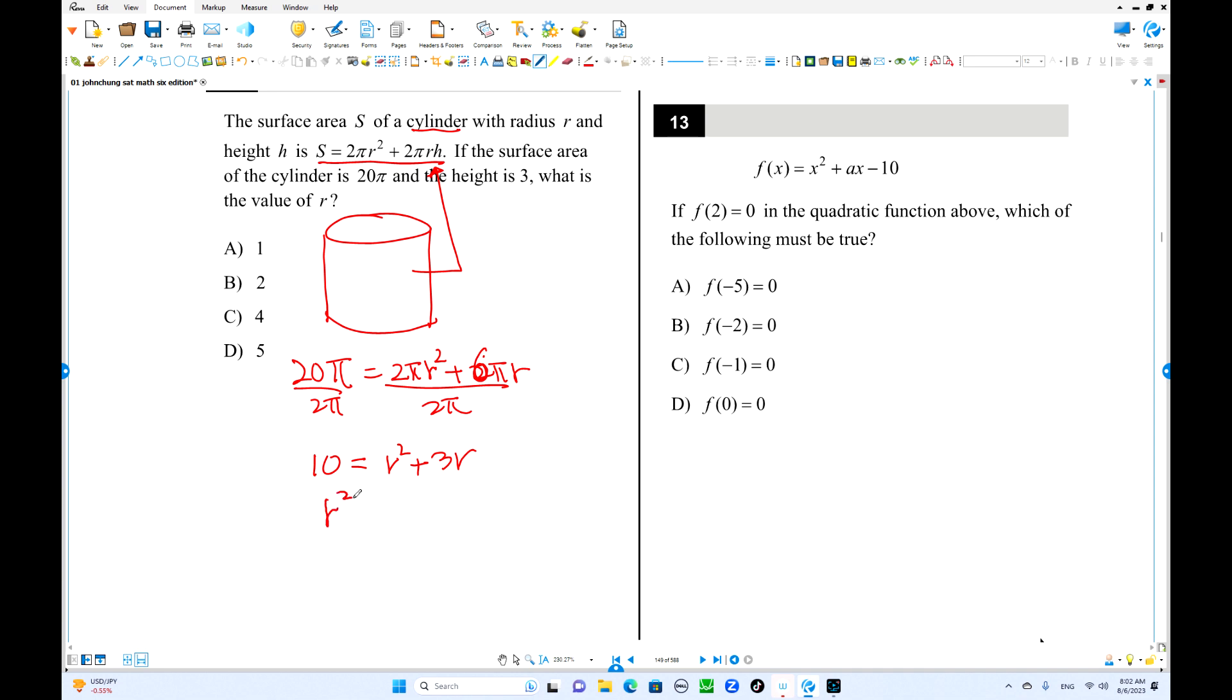That is 10 equals r square plus 3 r. So r square plus 3 r minus 10 equals 0. This is the quadratic factor. r plus 5 r minus 2 equals 0. So this is negative. r equals 2 is then. That's right.